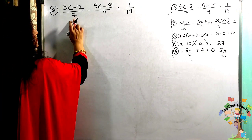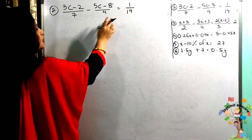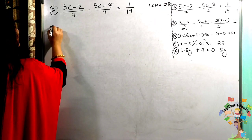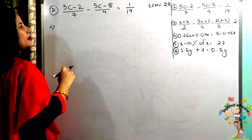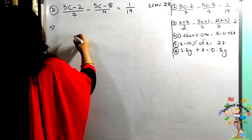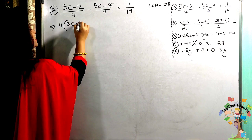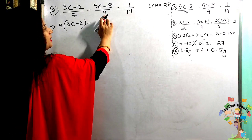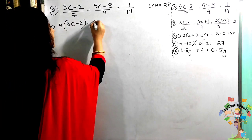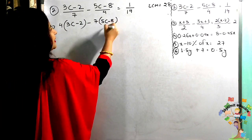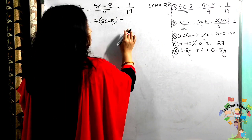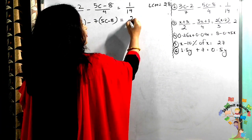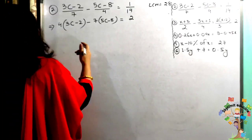Now let us find the LCM of the denominators 7 and 4 — the LCM will be 28. First step: LCM divided by first denominator, 28 ÷ 7 = 4, so 4 multiplied to numerator (3c − 2). Then minus sign. Next denominator is 4: 28 ÷ 4 = 7, multiply to numerator (5c − 8). LCM 28 ÷ denominator gives 2, and 2 multiplied to numerator 1 gives 2.